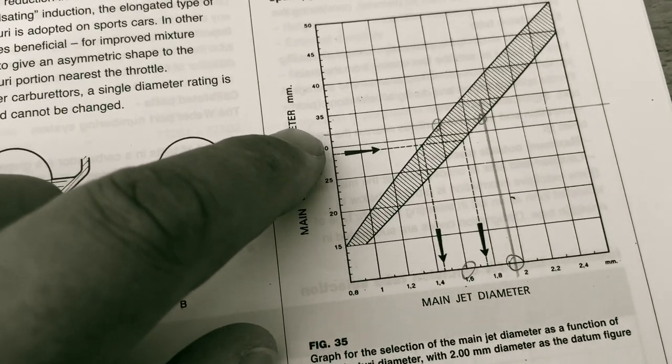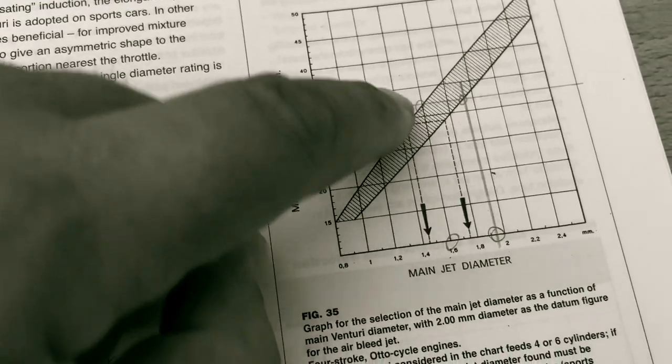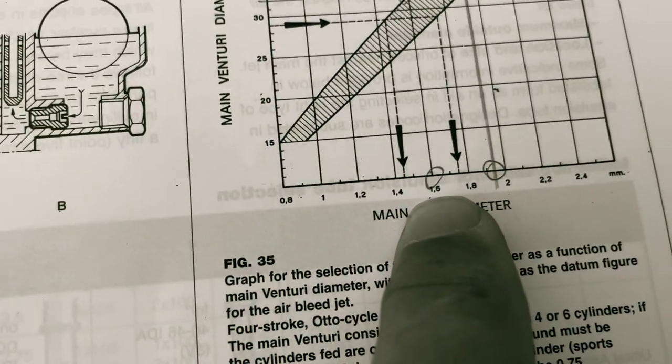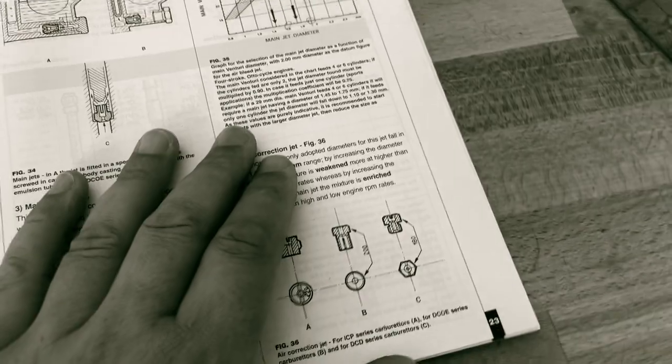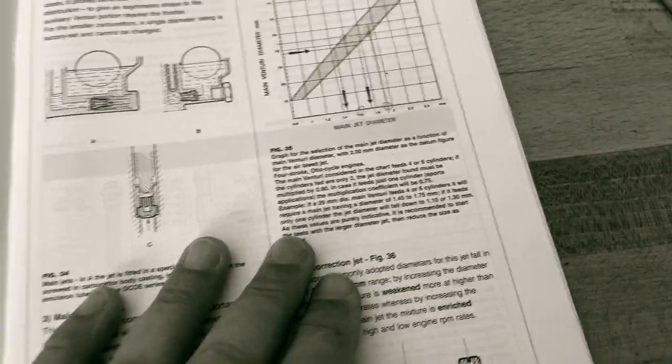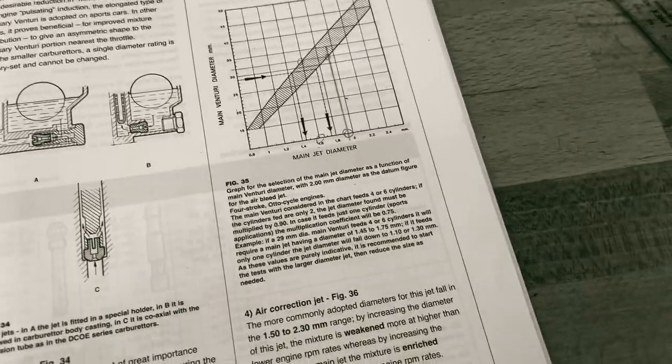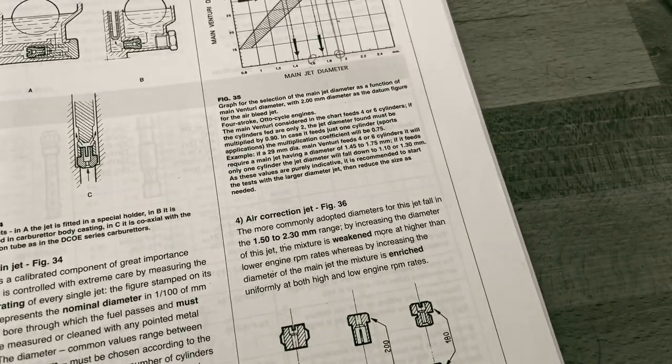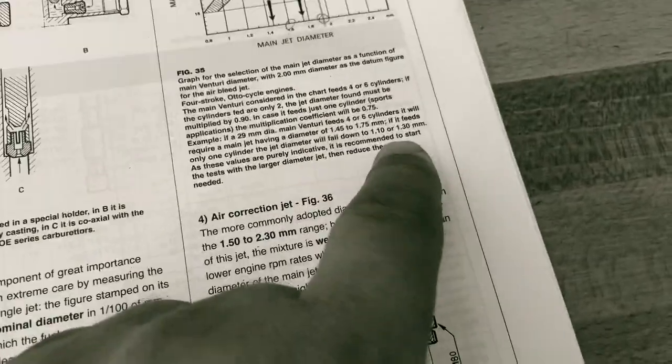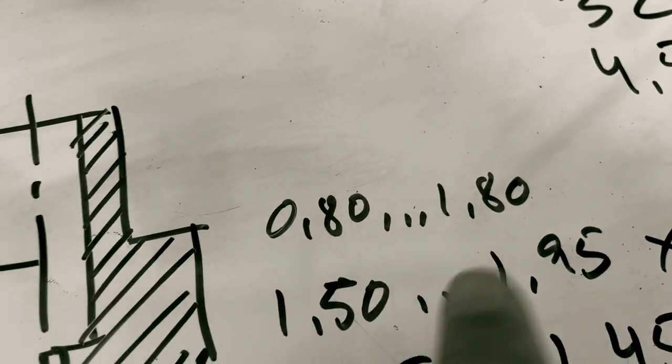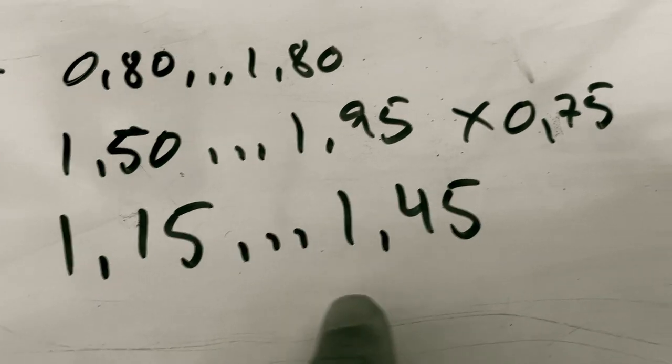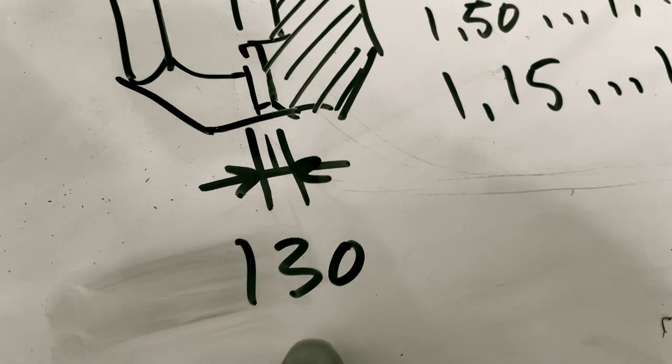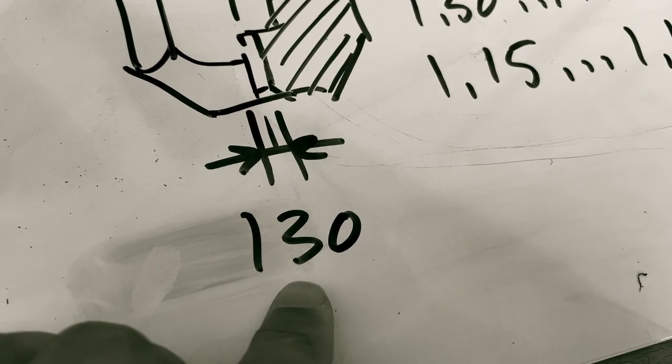This graph says for a 32mm venturi there's a range giving us between 1.5 and 1.95mm. Then there's explanation about how many cylinders will be fed by each barrel in the carburetor. If you have one barrel per cylinder, you need to multiply this number by 0.75. So let's try that. There's the usual range. These numbers multiplied by 0.75 gives us 1.15 to 1.45mm. Right in the middle we have 130, that's 1.30mm.